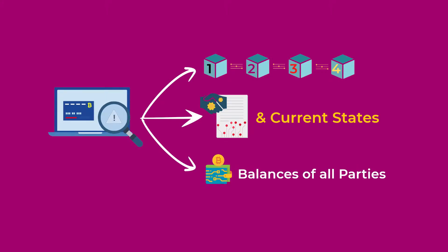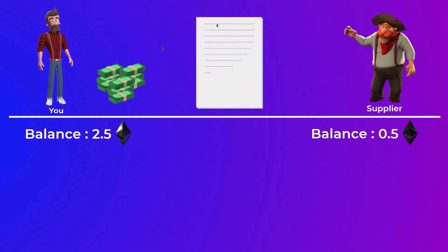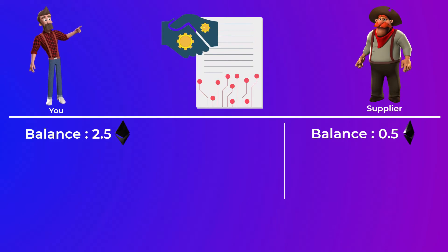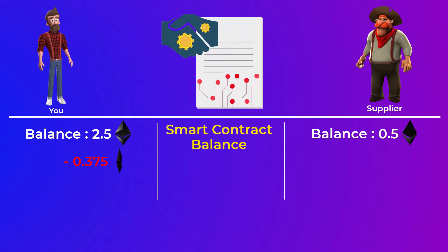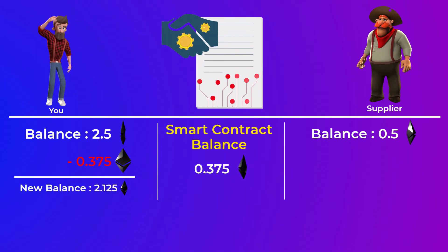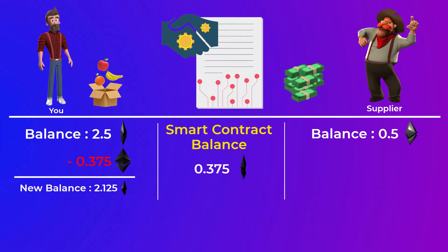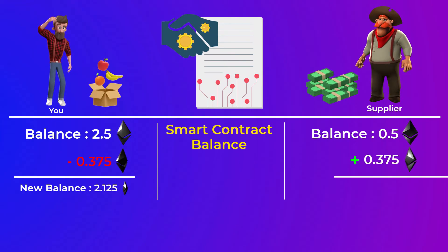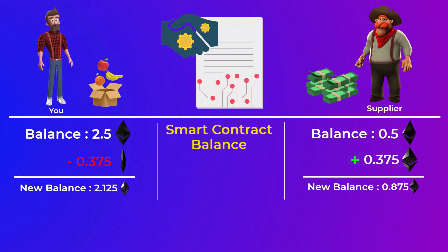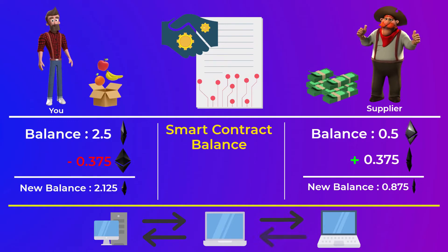Each computer on the blockchain network has a copy of all smart contracts, their current states, and also a copy of the balances of all participant parties. In our example, if your balance was $10,000 — say 2.5 ETH — and the supplier's balance was 0.5 ETH, when you lock up the money in the smart contract, your balance decreases by 0.375 ETH. After the supplier delivers and uploads the receipt, all computers on the network execute the code, send the money to the supplier's wallet, and update all balances across the network.